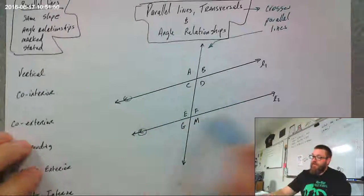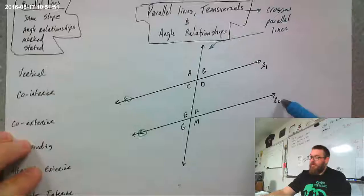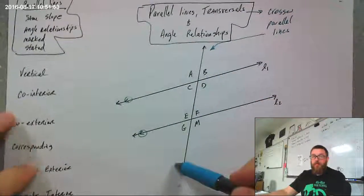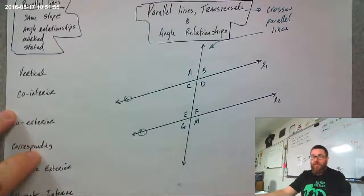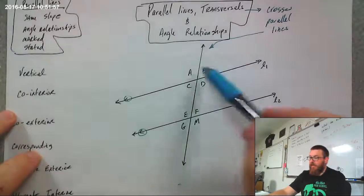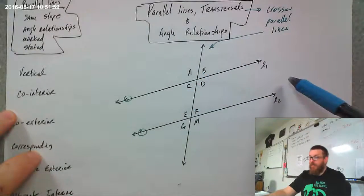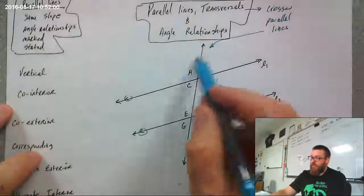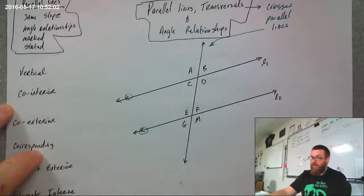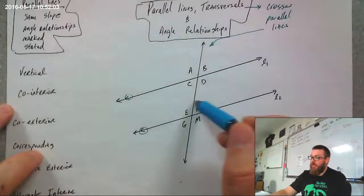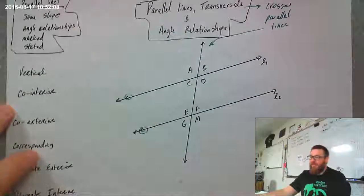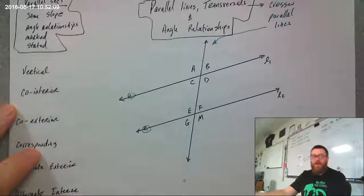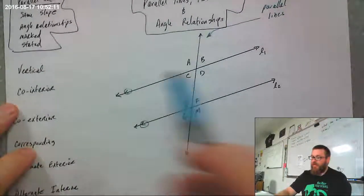Here we've got a pair of parallel lines, L1 and L2, and a transversal. I've put a letter in the angles created by these intersections — I've got a cluster of angles up here, A through D, and another cluster right here.